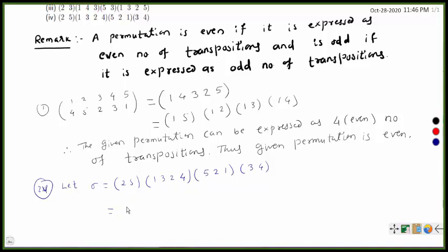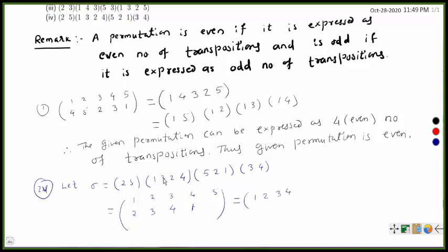Expressing sigma in standard form with elements 1, 2, 3, 4, 5: tracing element 1 — 1 goes to 5, then 5 goes to 2, so 1 maps to 2. For element 2 — 2 goes to 1, then 1 goes to 3, so 2 maps to 3. For element 3 — 3 goes to 4.